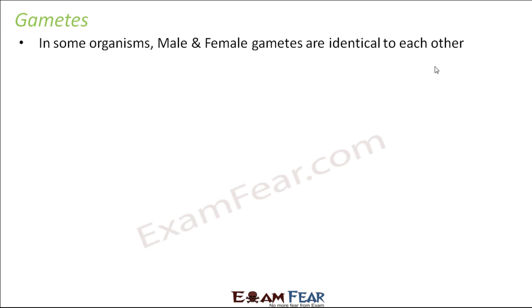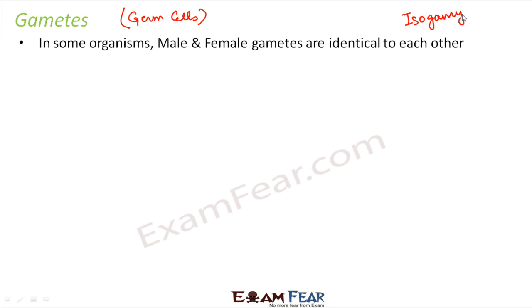Now in some organisms the male and the female gametes are exactly identical to each other. Gametes are also known as sex cells or germ cells — germ cells is another term often used for gametes. Those organisms where the male and female gametes are identical to each other, that is known as isogamy — iso means same, gamy means gamete, so same gametes meaning they have identical gametes. Examples are green algae like Chlamydomonas and Spirogyra — the male and female gametes are so identical that you cannot distinguish which is the male gamete and which is the female gamete because they look exactly similar.